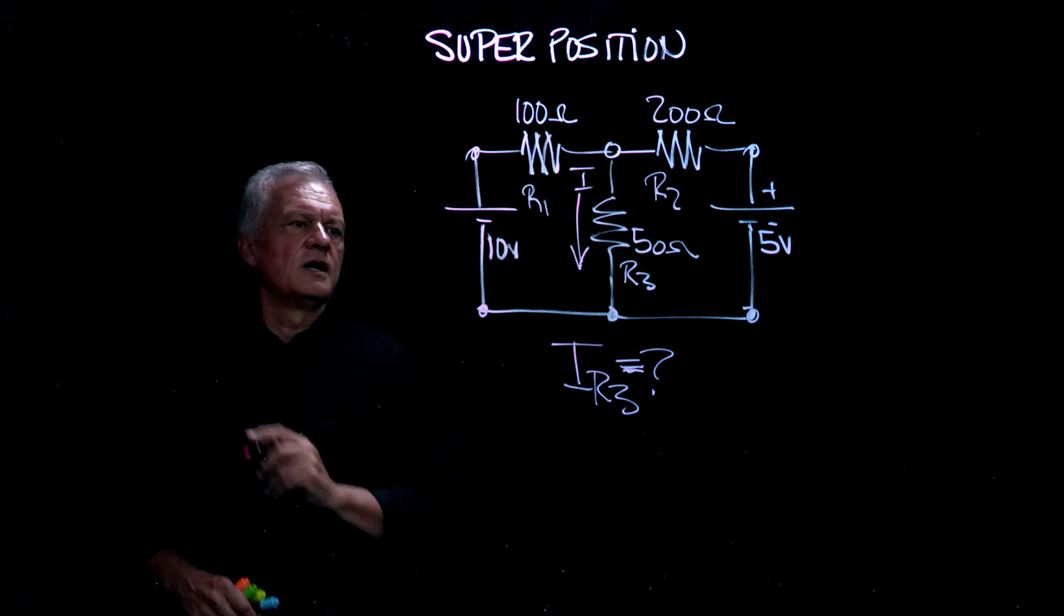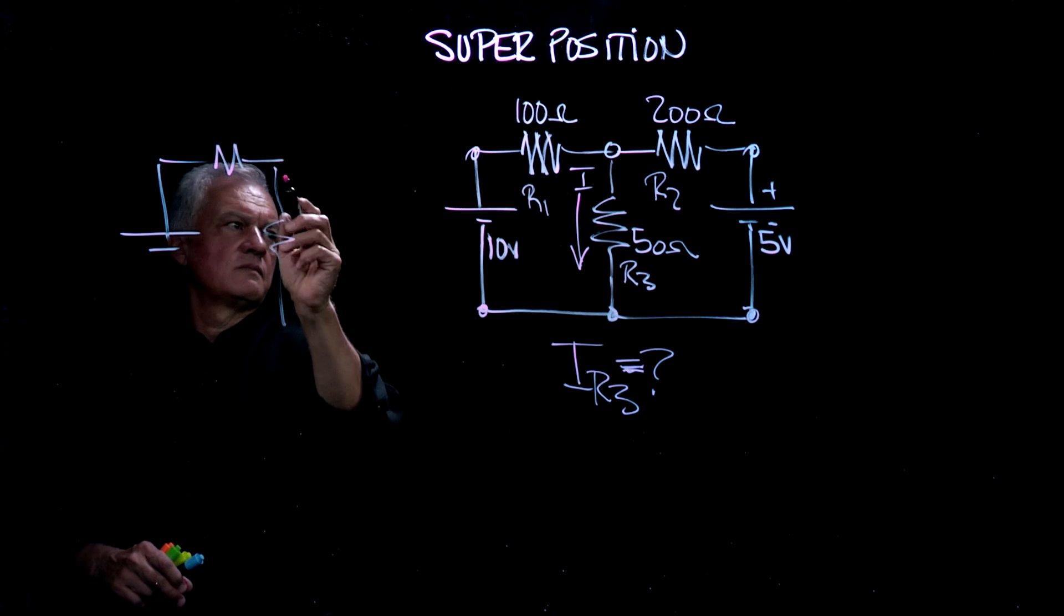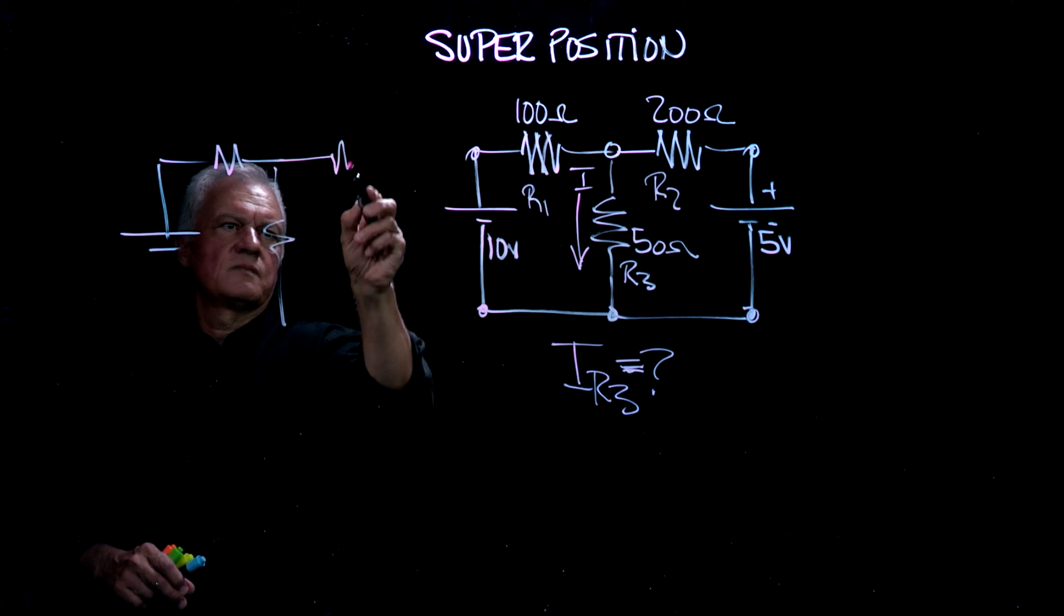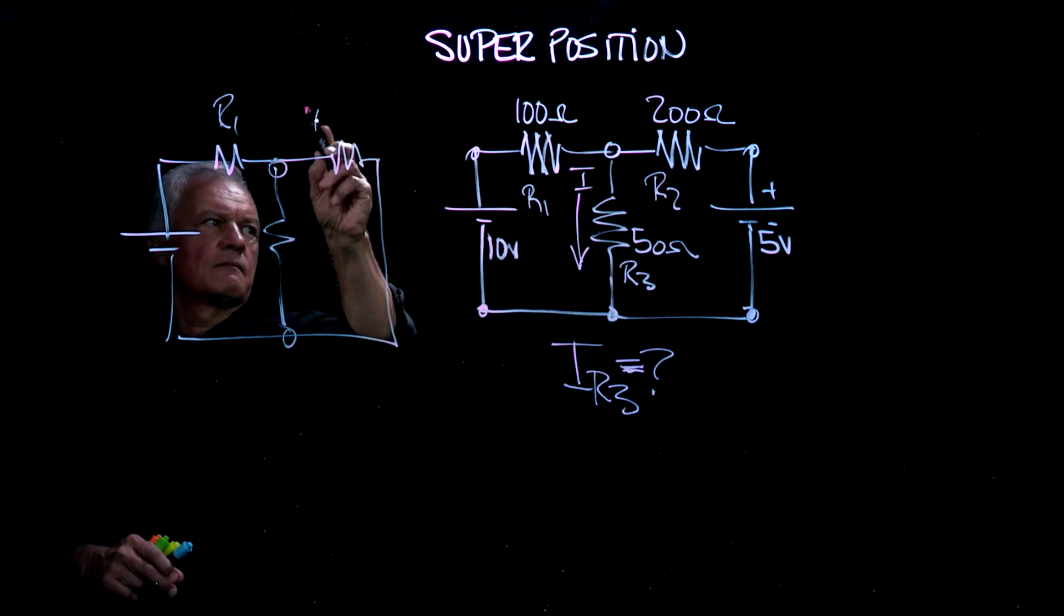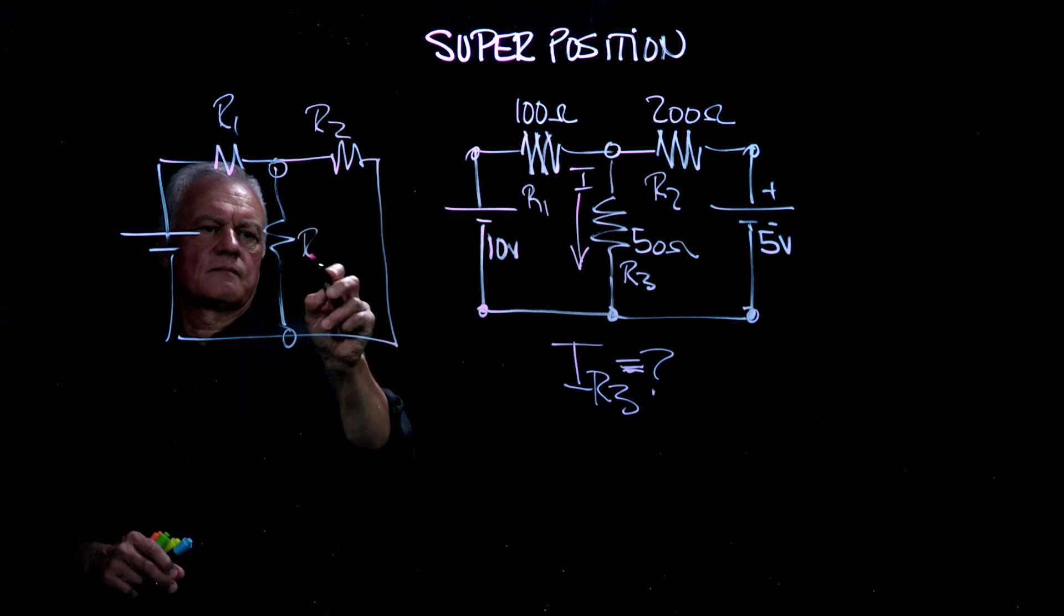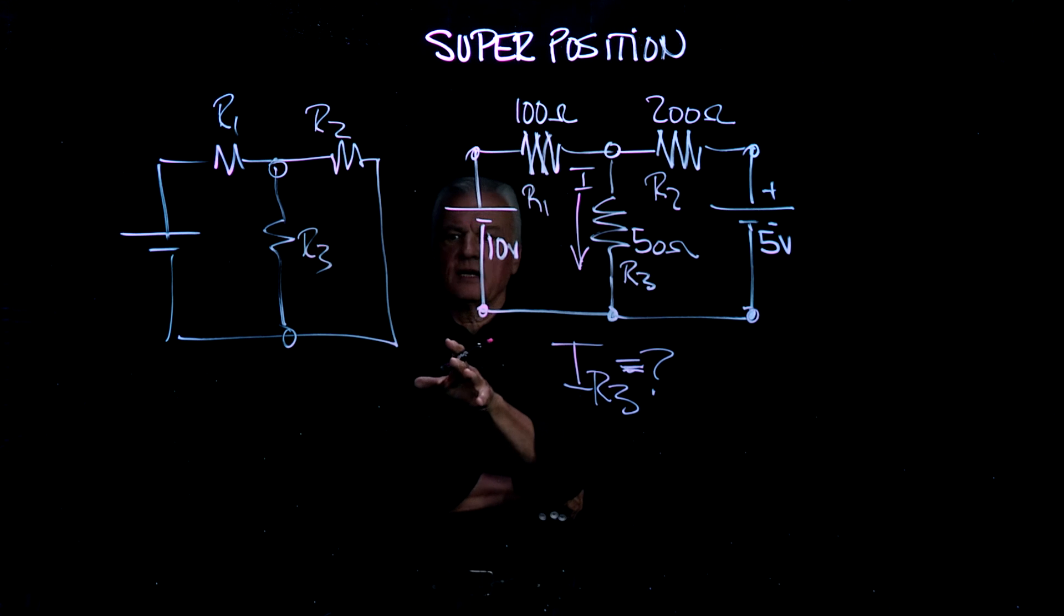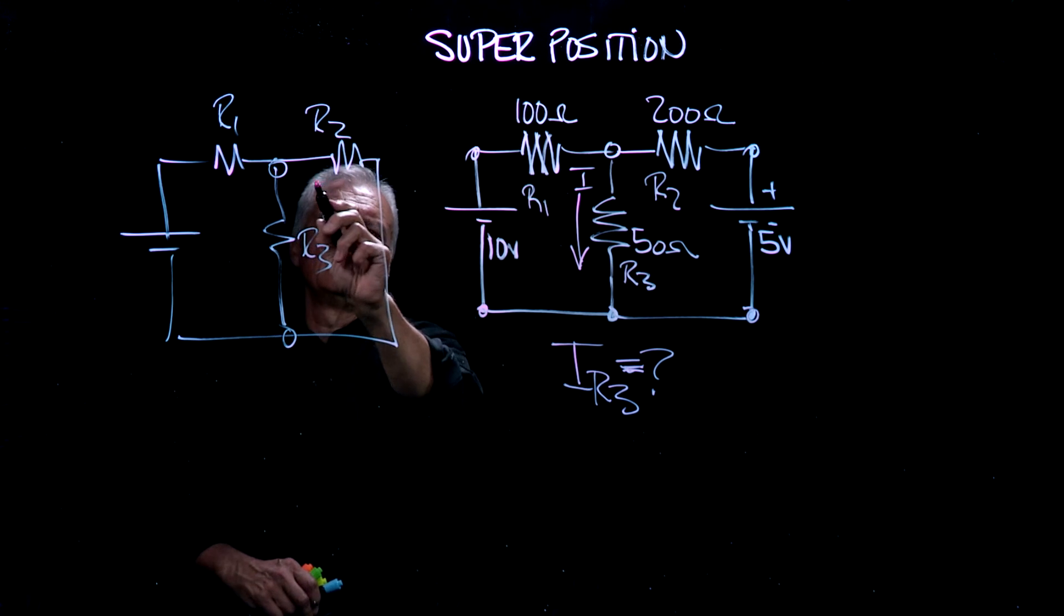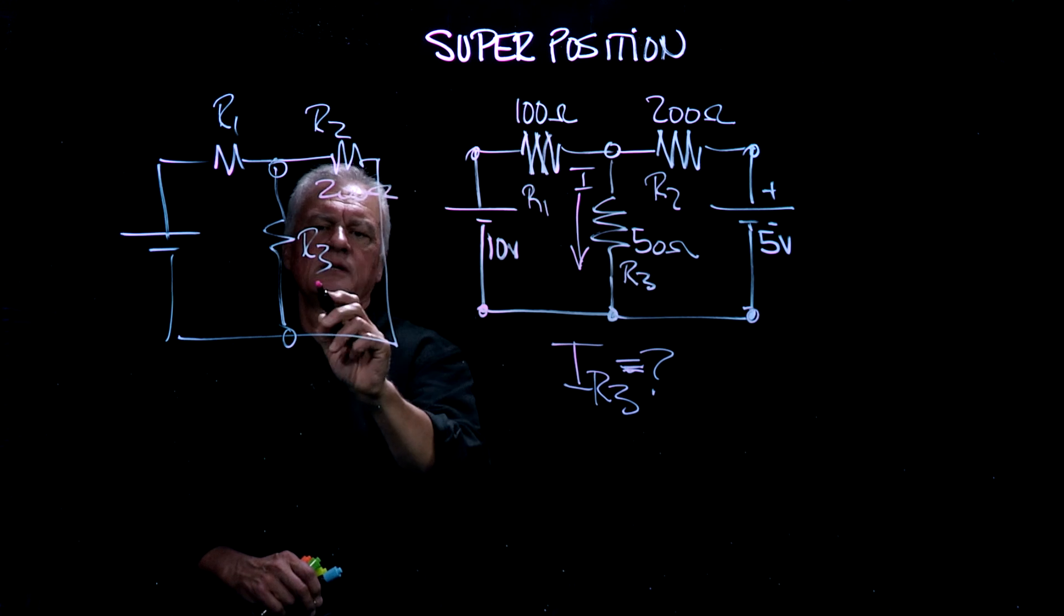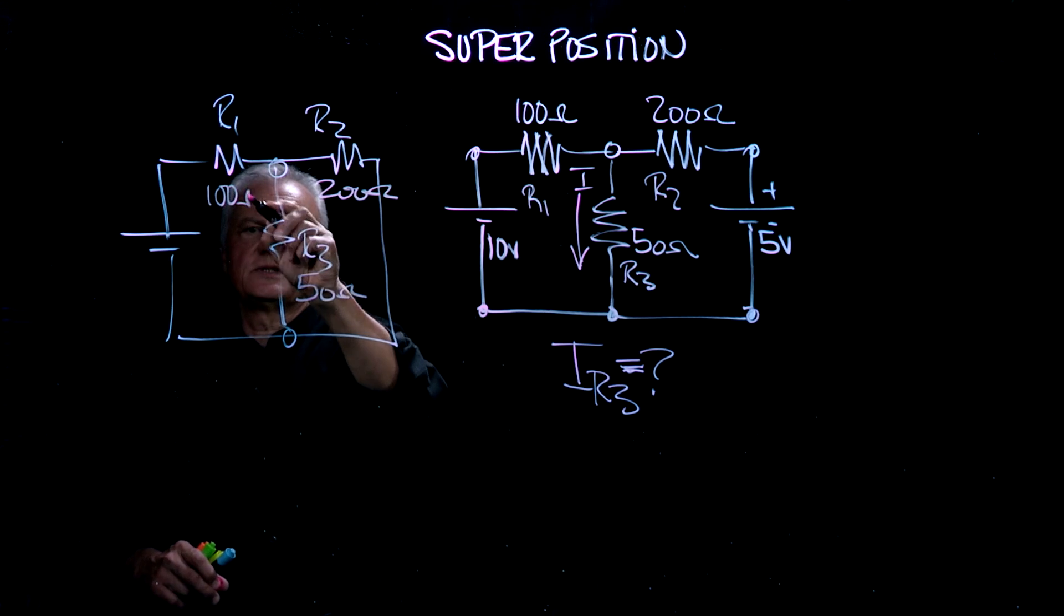In this case here, I'm going to draw our 10 volt contribution. As you can see, R2 is in parallel now with R3 as a result of shorting the 5 volts. So we've got 200 ohms in parallel with 50 ohms, and we're going to add the 100 ohms which is in series.